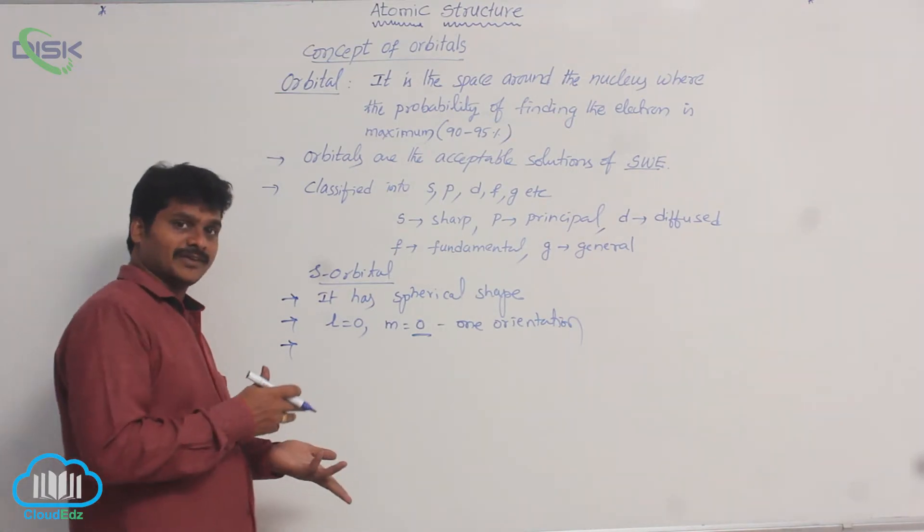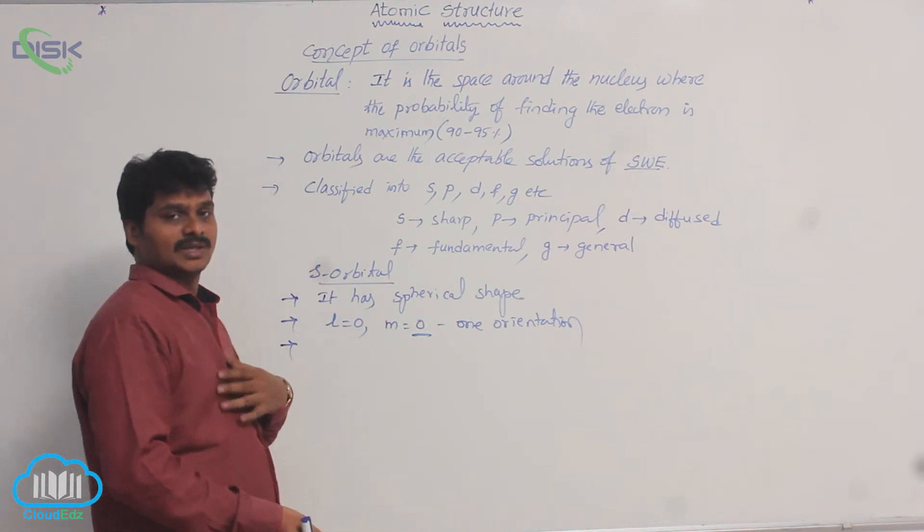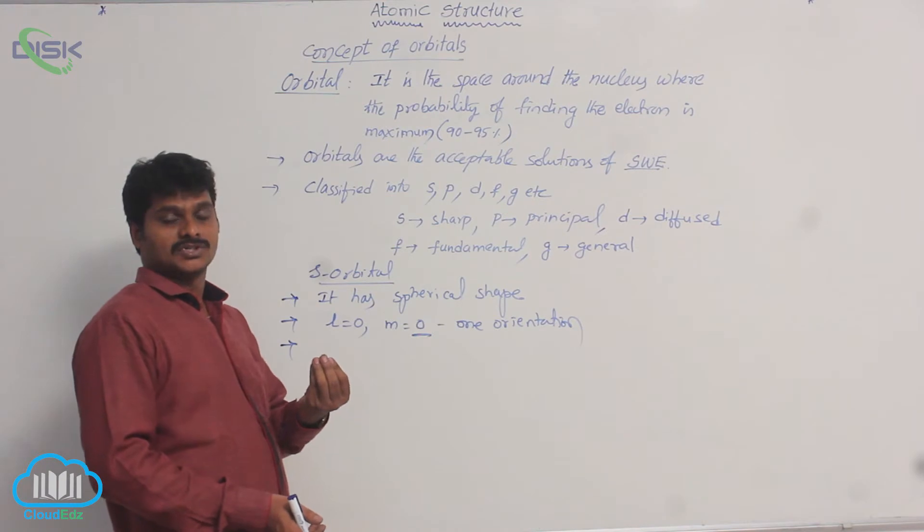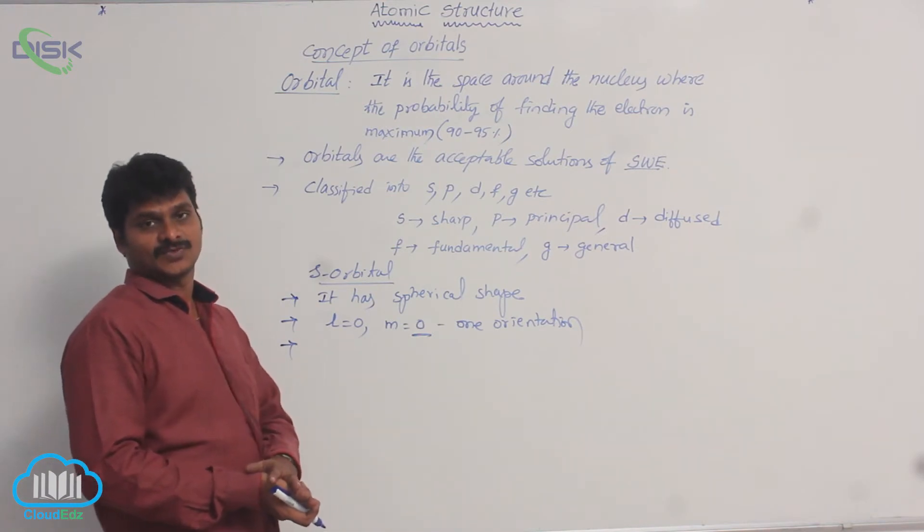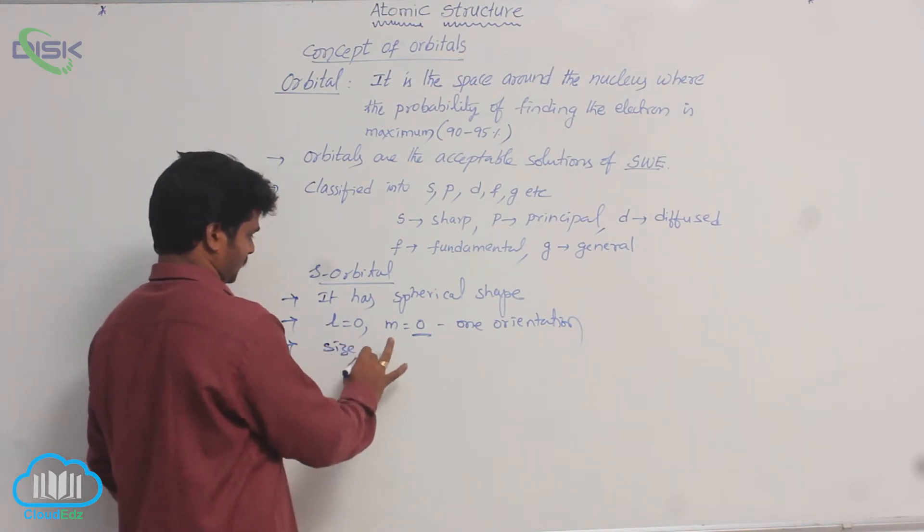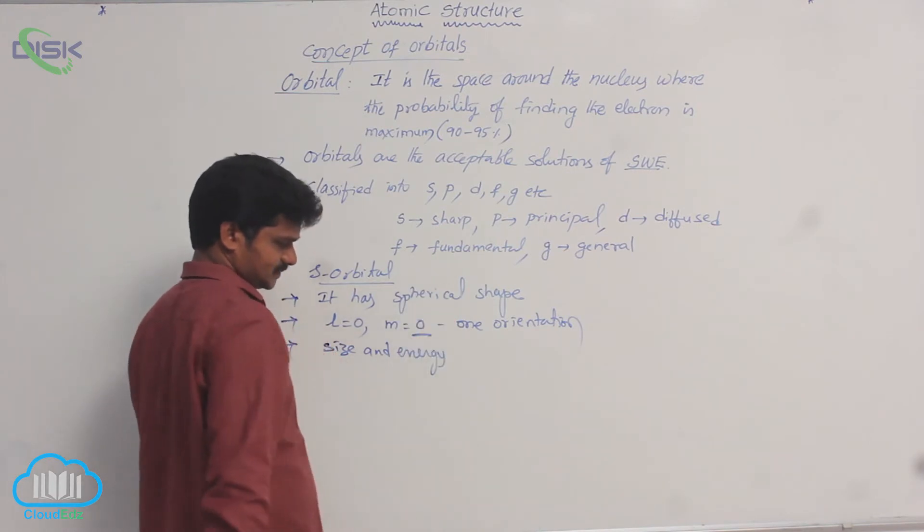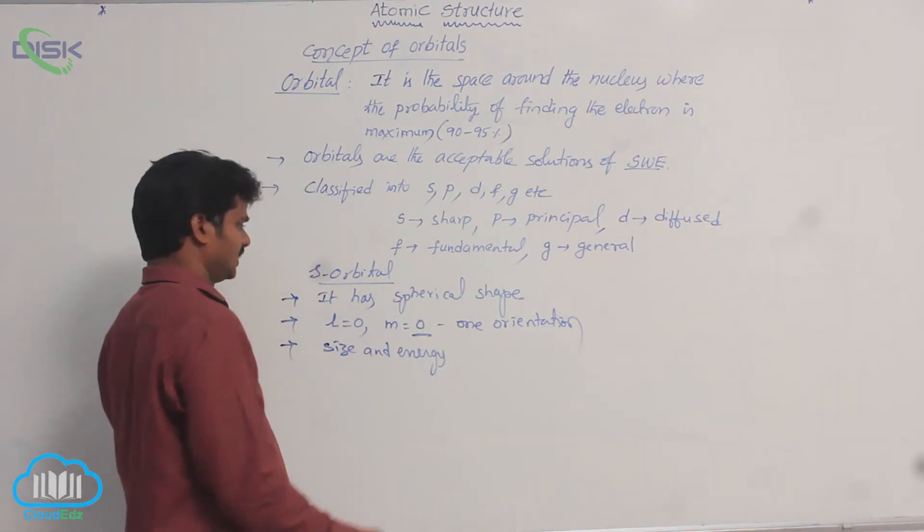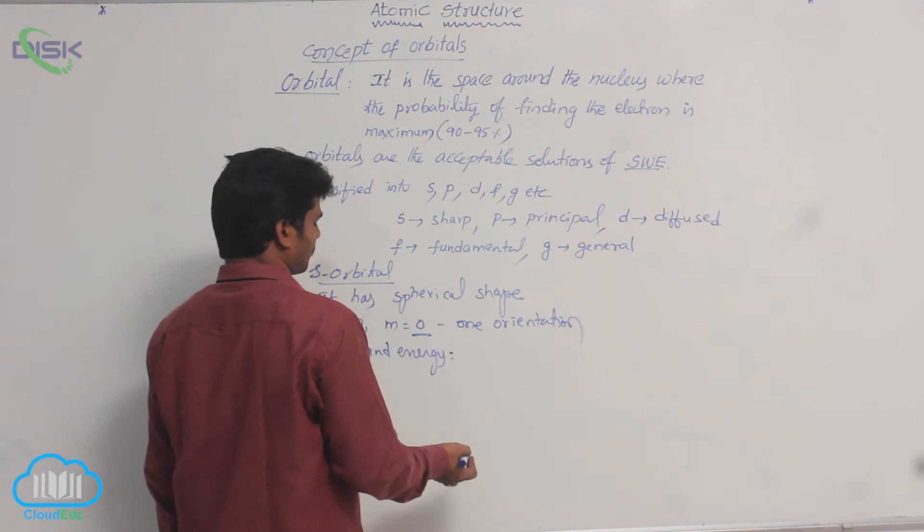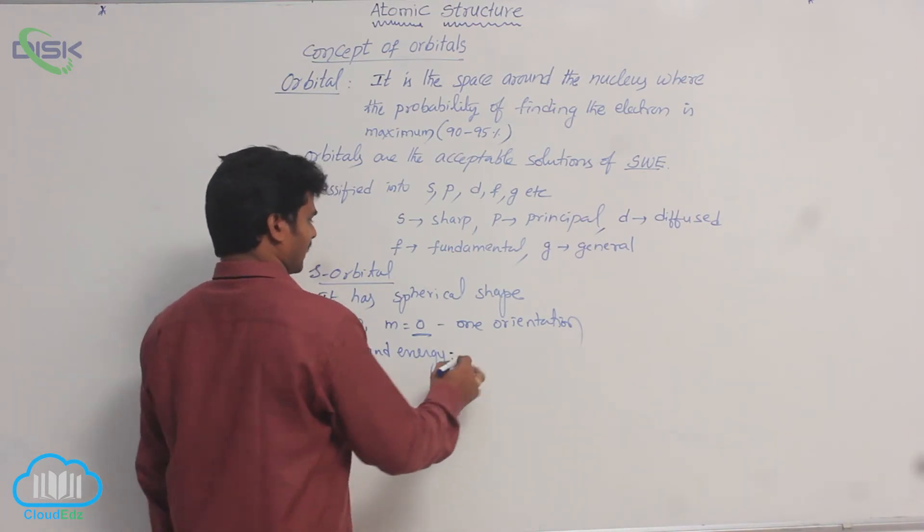Similarly, what is the difference between 1s, 2s, 3s, 4s? So in those orbitals, shape does not change. Only size increases. Size and energy. Size and energy of the orbitals increases with increasing principal quantum number value.